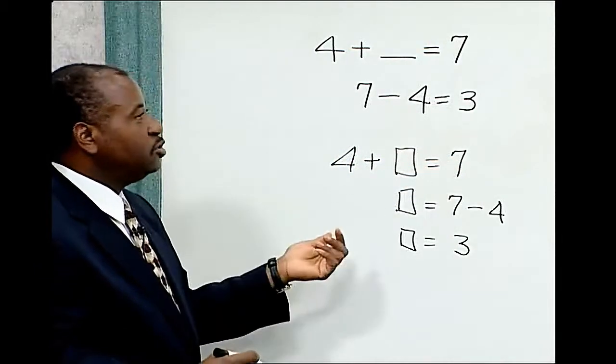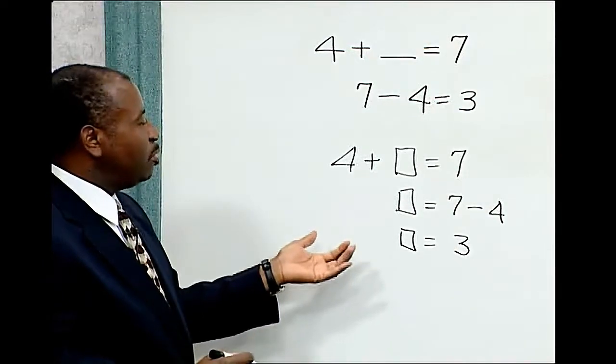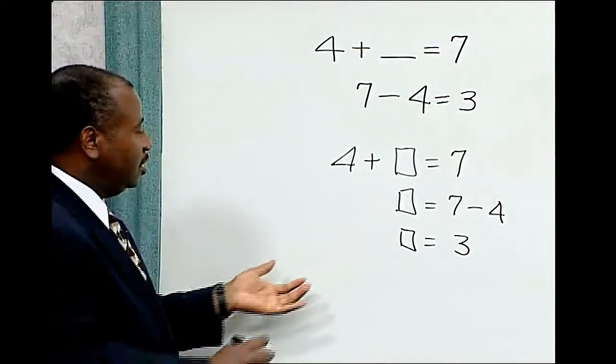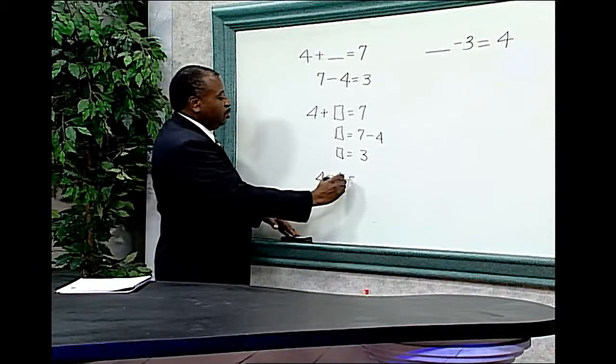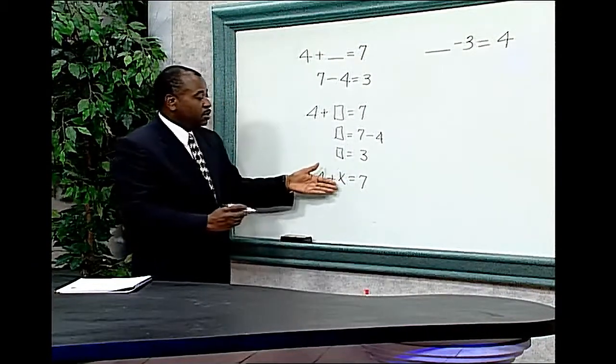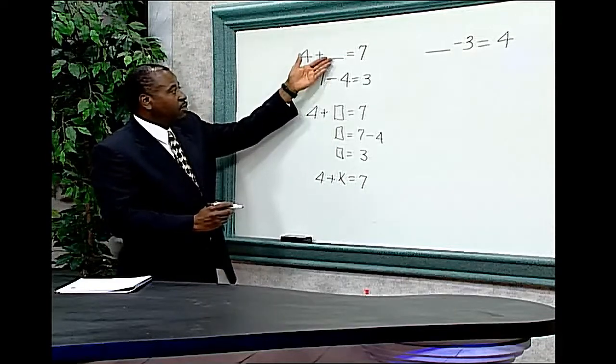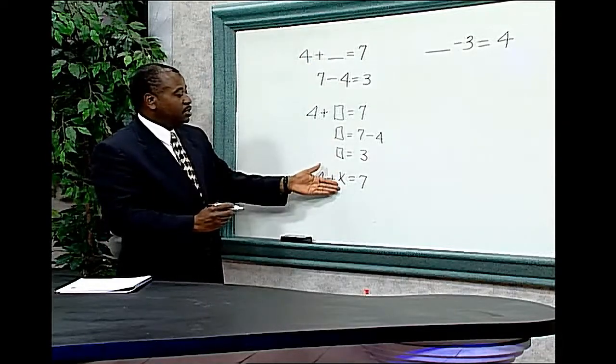This problem can also be extended to algebra facts, although at this time you're not required to learn algebra facts. 4 plus x equals 7, where x represents the box or the blank, or x represents a number.